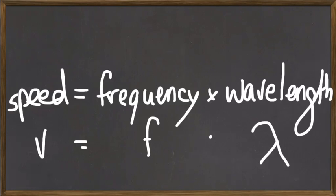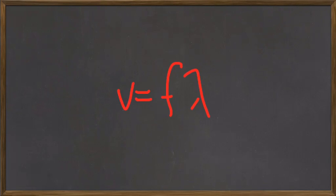Notice why physicists like symbols. As opposed to writing these formulas out, we can just write V equals F lambda, and that means the same thing as frequency times the wavelength is equal to the speed. Much simpler to write.